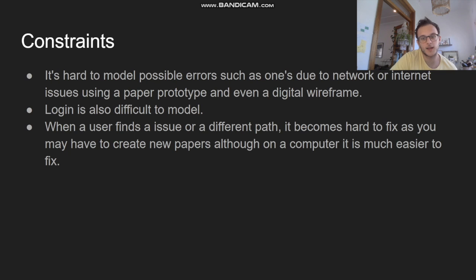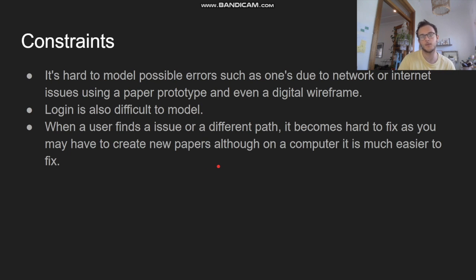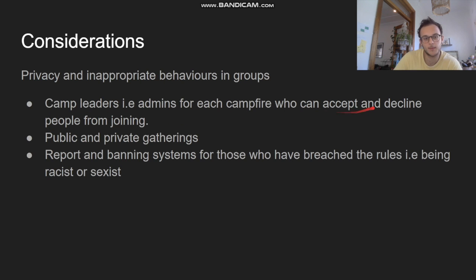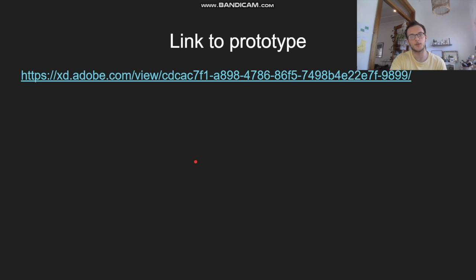Some constraints of using these kinds of models are that it's hard to model errors that may occur due to network or internet issues, and logging is also difficult to model. When a user finds a new path or issue, it's hard to model on paper — you have to create a new thing — but on the computer it's much easier to fix. Some considerations I haven't fully addressed include how camp leaders will accept people joining public and private gatherings, and the ability to report and ban people who are being racist or sexist. Here's a link to my prototype. I hope you enjoyed.